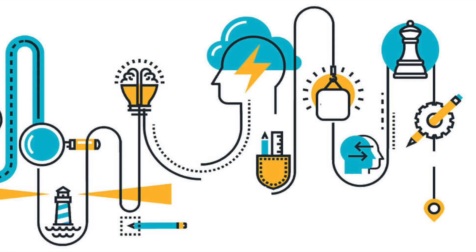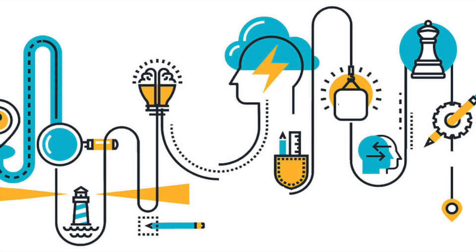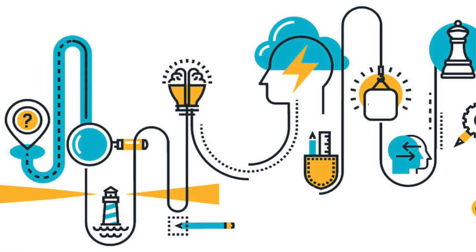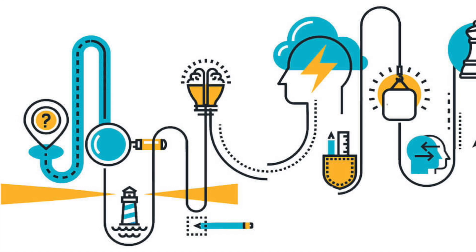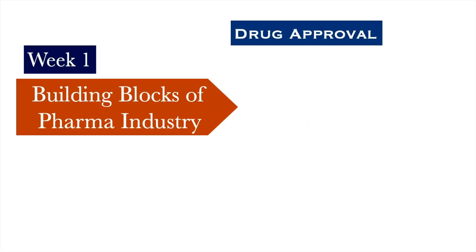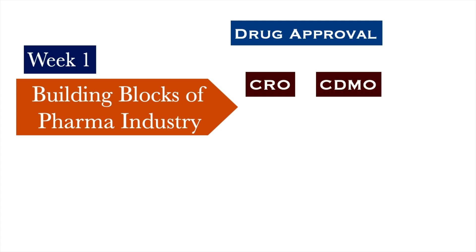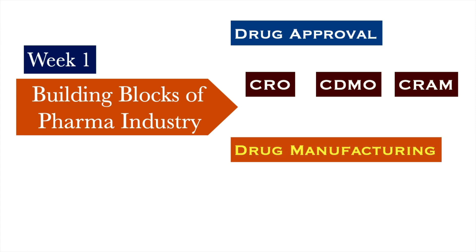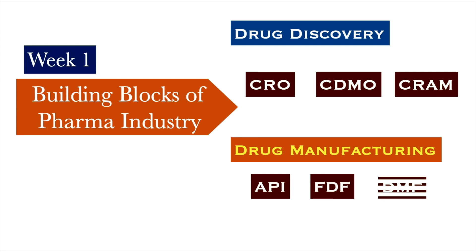At the same time, the pharmaceutical industry is full of processes. I am going to explain two processes that will simplify the pharmaceutical industry. The most important process is the drug approval process, and to understand it we need to understand a few terms: CRO, CDMO, and CRAM. After that, we need to understand the drug manufacturing process — what does an API do, what does an FDF do, and what is a DMF file. So these are the 6 key terms of today's video.